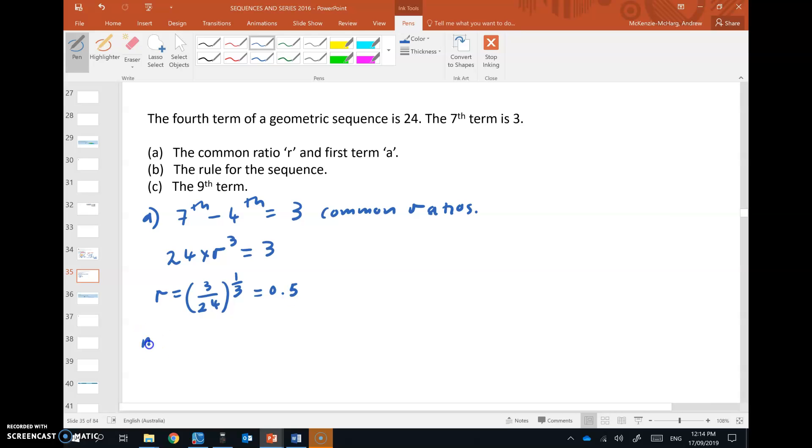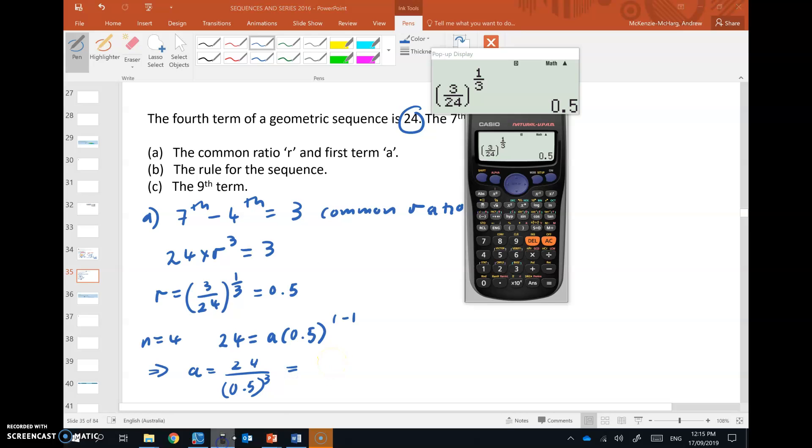So when n is equal to 4, our fourth term is 24, so 24 equals a by 0.5 to the 4 take 1. So that means a equals 24 divided by 0.5 to the power of 3, because 4 take 1 is 3. So let's do that one. And that gives us a first term of 192.